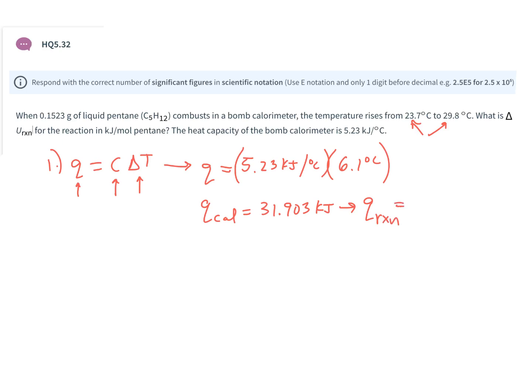The pentane released this energy, so it's a negative 31.903 kilojoules. So because the calorimeter absorbed this energy and went up in temperature, it's because the reaction lost an equal amount of energy.